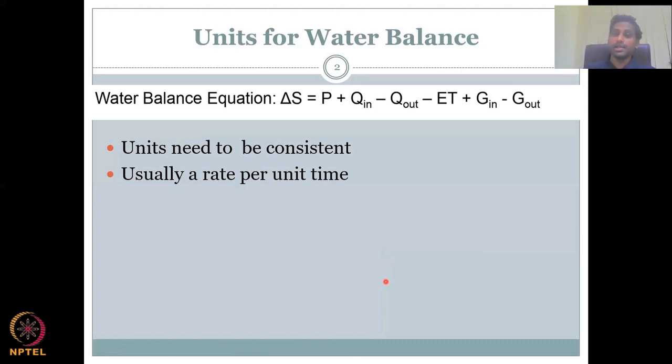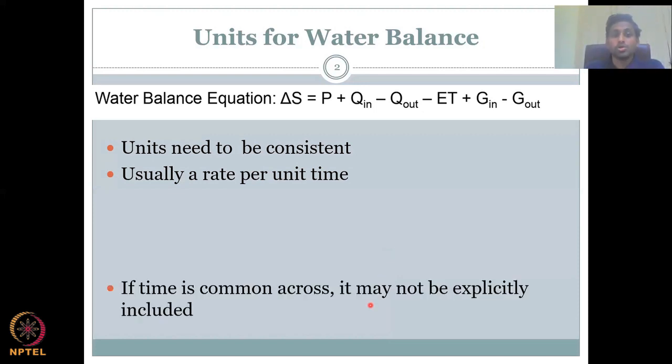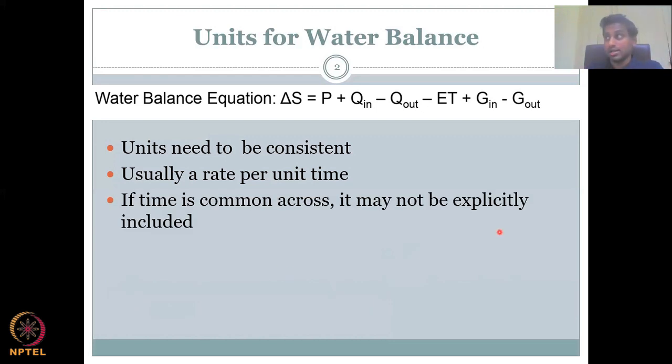Usually, a rate per unit time, but it's not explicitly given here. For example, when you write it, most people would write del s as millimeters, precipitation as millimeters, q in millimeters, q out millimeters, et, g, g out millimeters. Because when we define the water balance equation, somewhere, the author would have defined it as water balance annual or daily water balance. So, sometimes your unit of time is implicit. It's not as explicit as your parameters, P is rainfall millimeters or inches. So, be careful to understand the unit when you have seen the water balance equation. It's always good to go back and check. Are they doing it correctly? Is it correctly what you want? If time is common across, it may not be explicitly included.